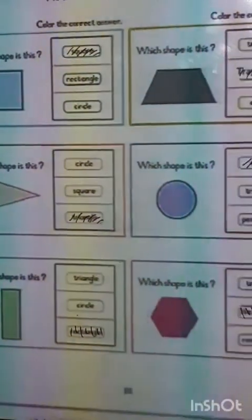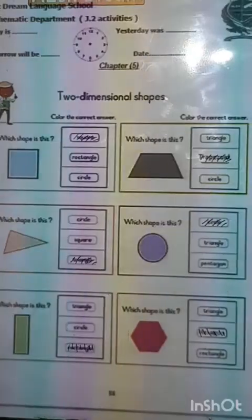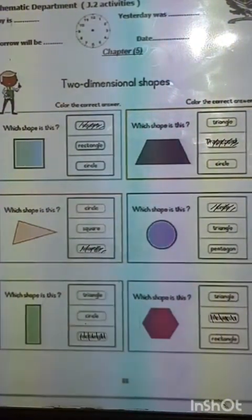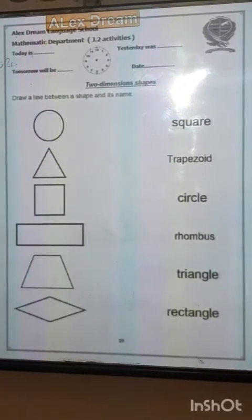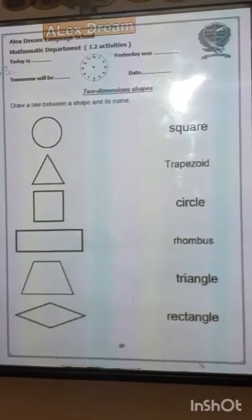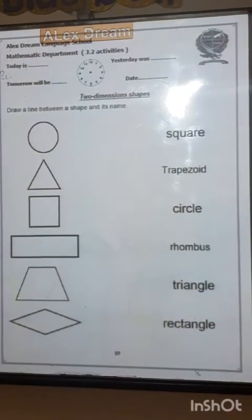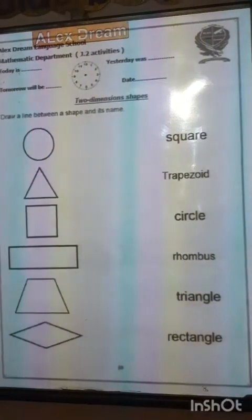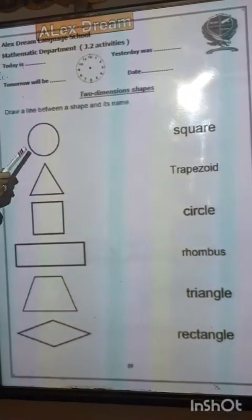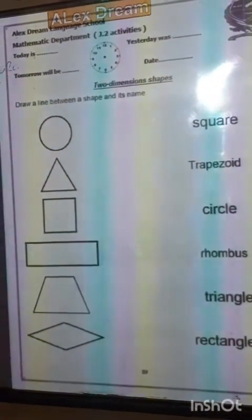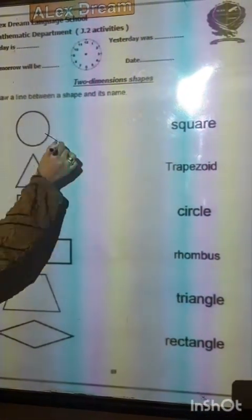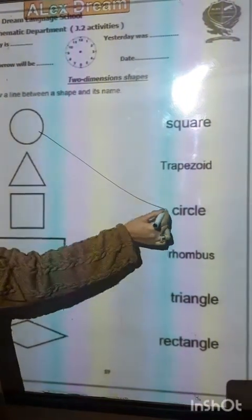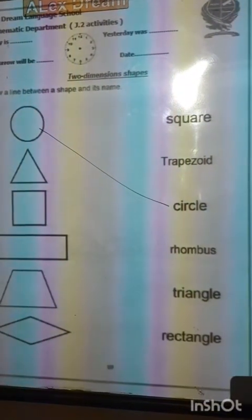Turn to it. Open page 89. Draw a line between a shape and its name. Okay? The name of this shape is circle. So draw a line between them.